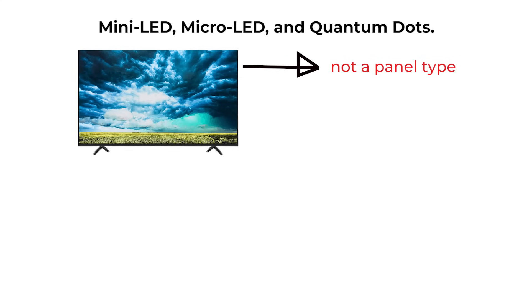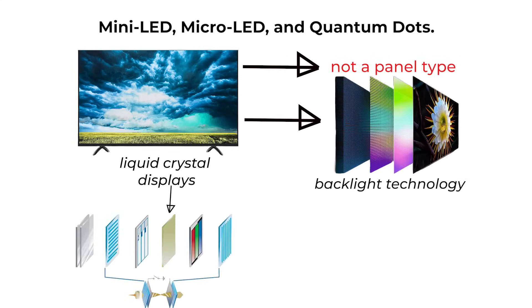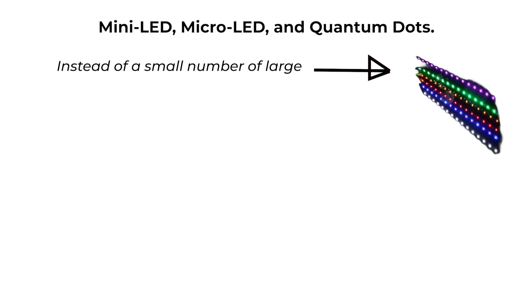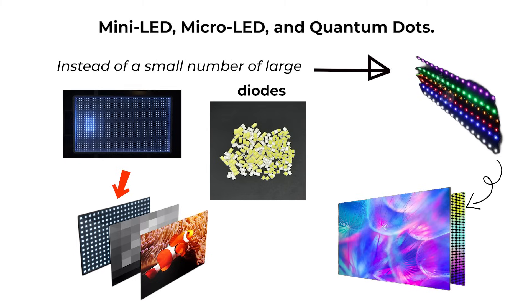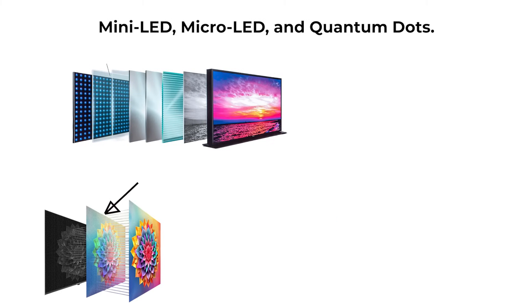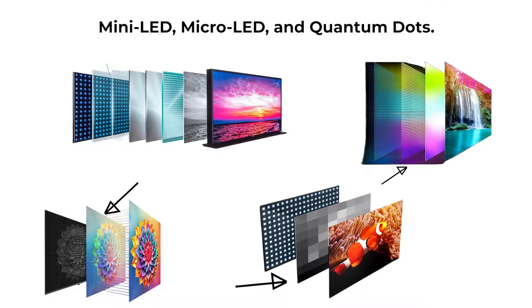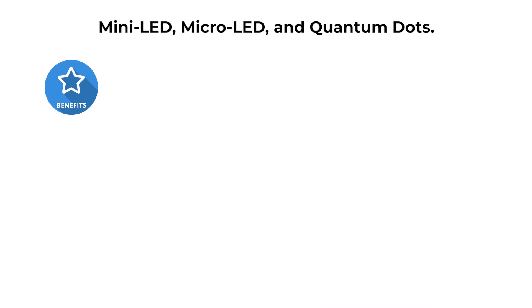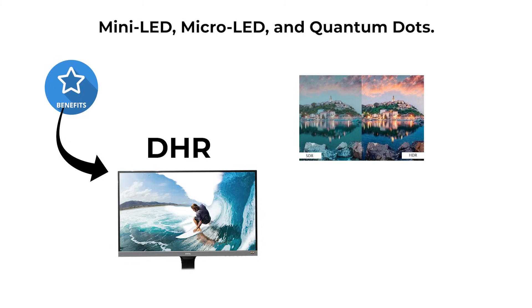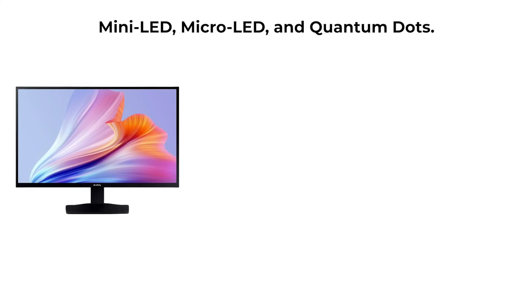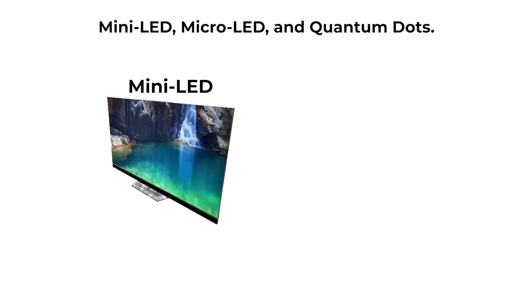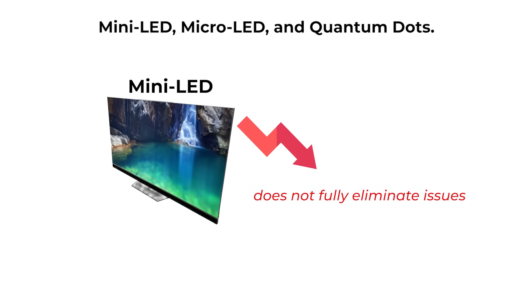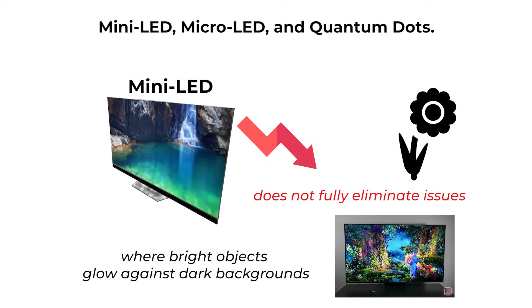Mini-LED is not a panel type, but a backlight technology used with liquid crystal displays. Instead of a small number of large light sources, mini-LED uses thousands of tiny light emitting diodes grouped into dimming zones behind the liquid crystal display panel. These zones can brighten or darken independently, allowing much more precise control of brightness. The main benefit is improved high dynamic range performance. However, since it is still a liquid crystal display, contrast and viewing angles depend on the underlying panel type, such as IPS or VA. Mini-LED greatly reduces, but does not fully eliminate, issues like blooming, where bright objects glow against dark backgrounds.